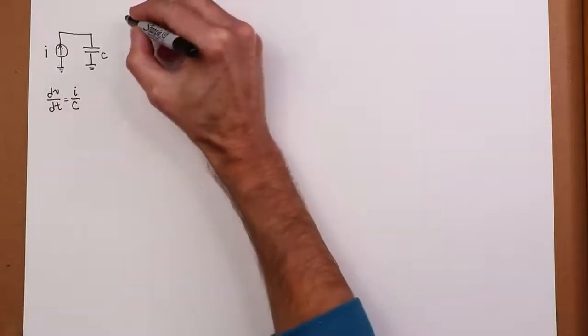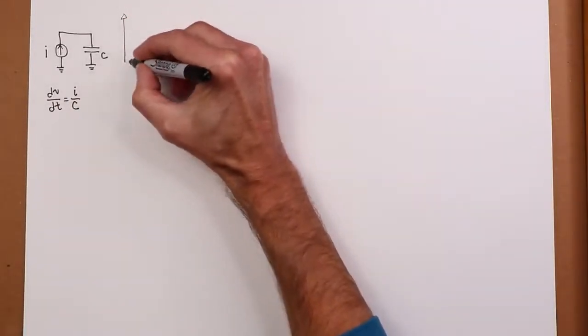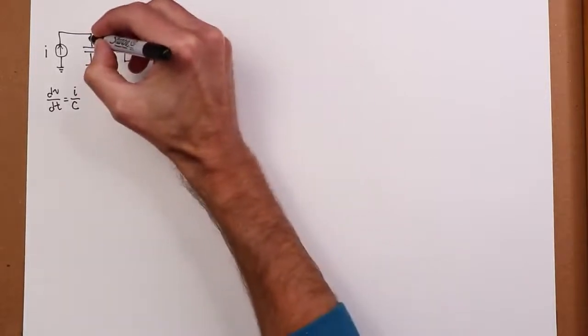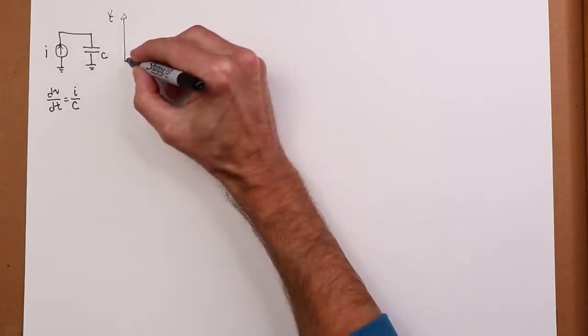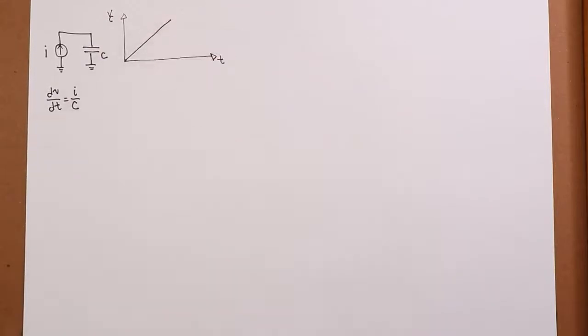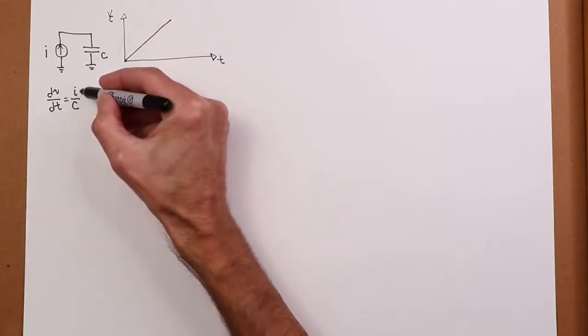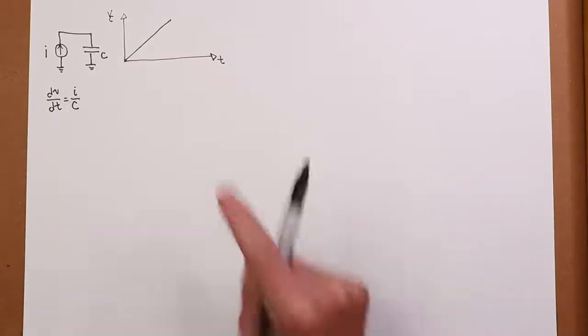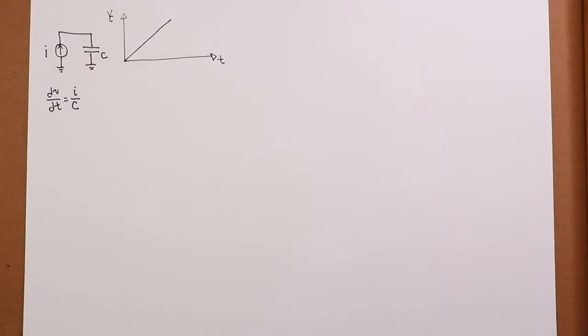If we plot that, we get something that looks like this. Here's time, here's the voltage across the capacitor, you get a nice straight line. The value is clearly dependent on the size of the current and the size of the capacitor. Bigger currents, smaller capacitors, faster change, steeper slope.